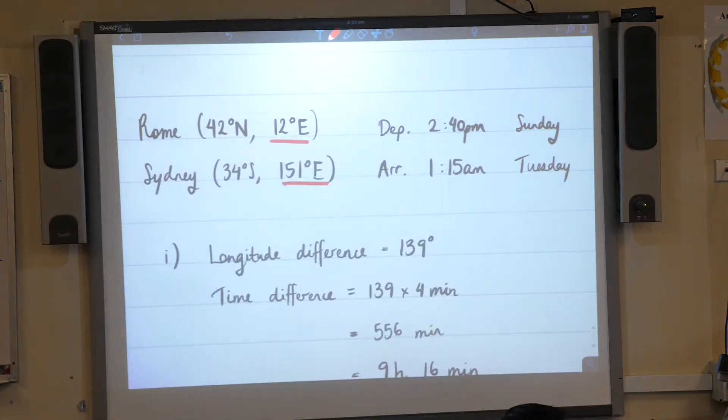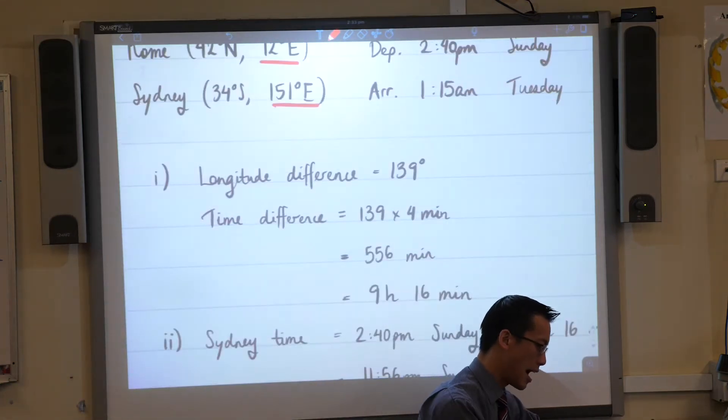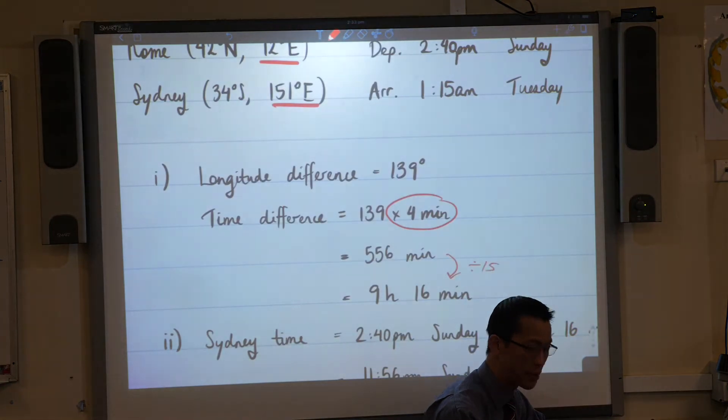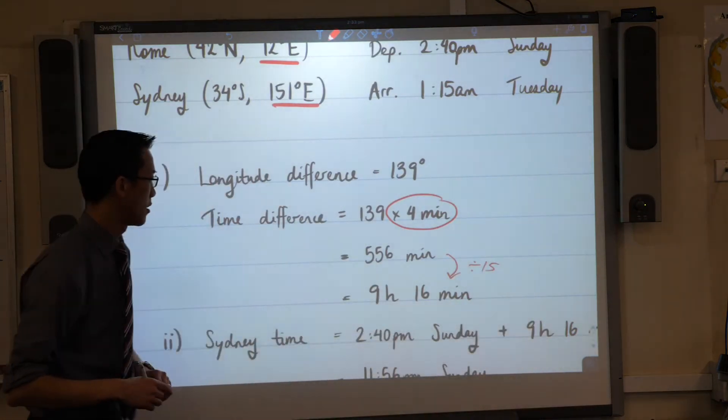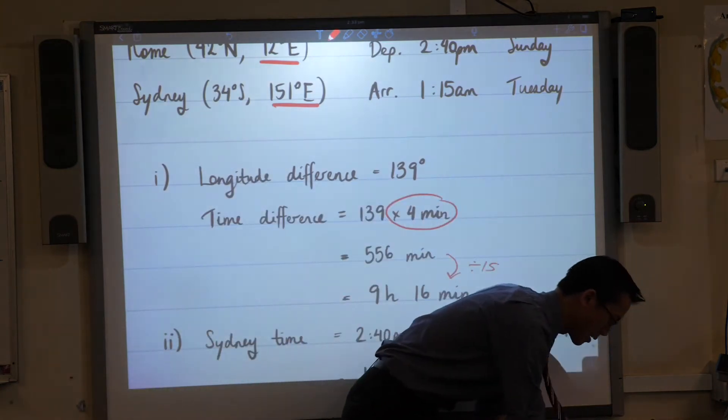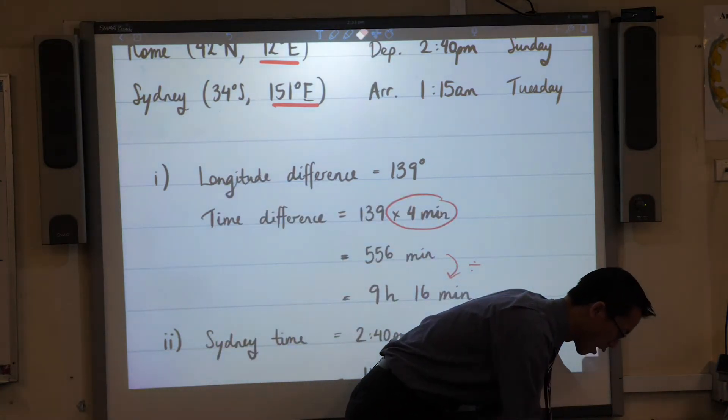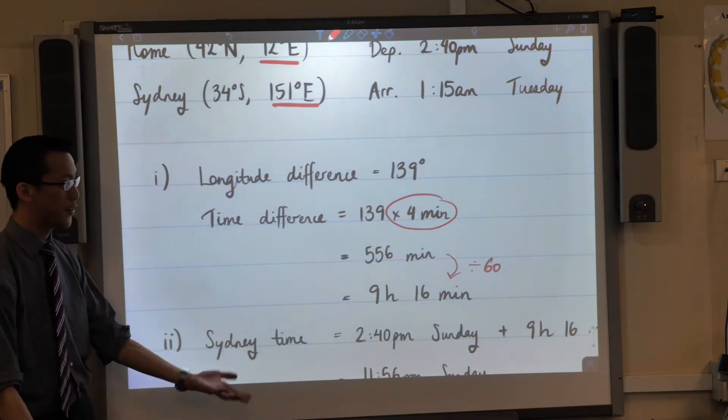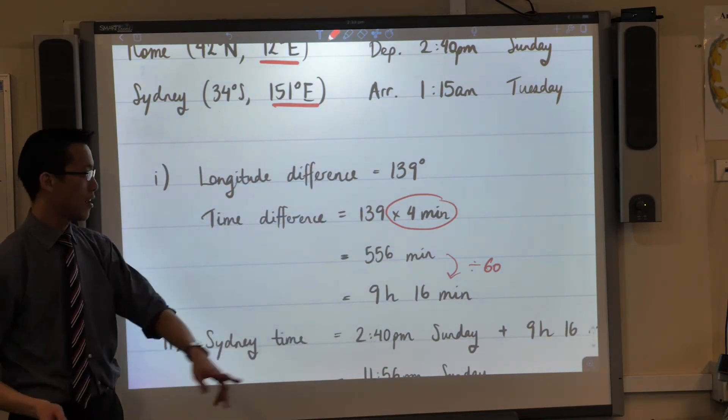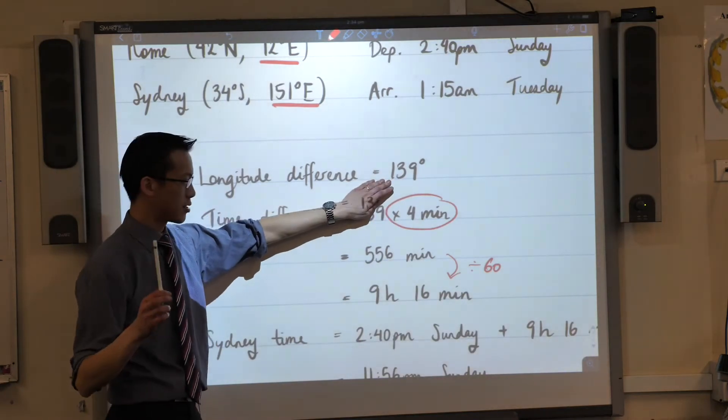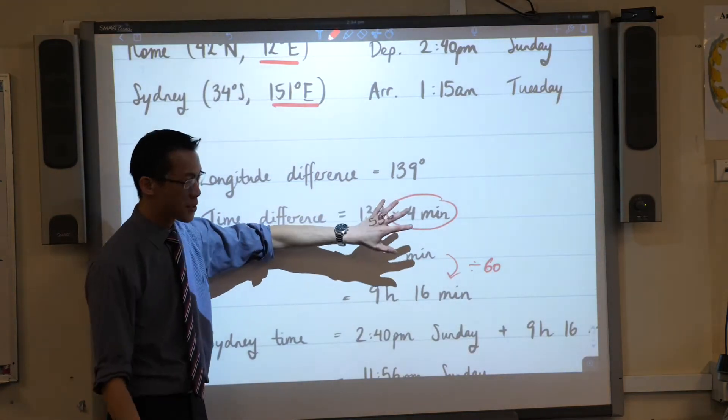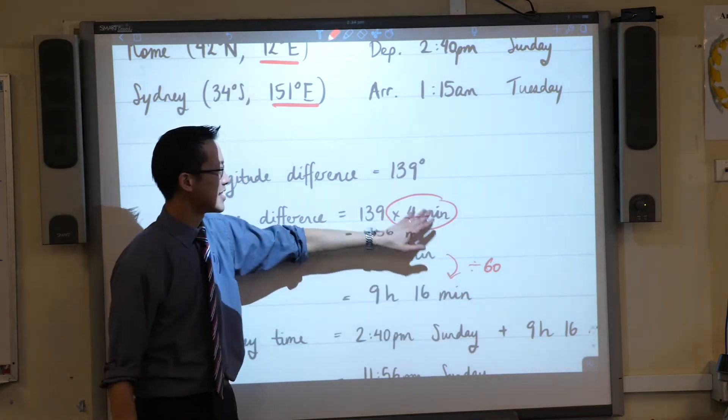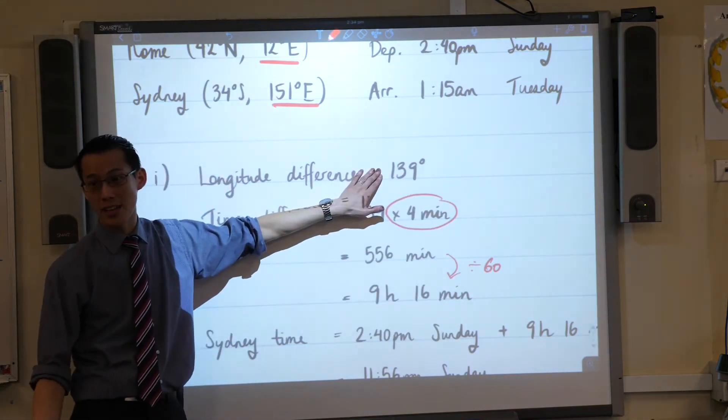So I multiplied by four and then divided by 60, because that's how many minutes there are in an hour. I haven't written it, but that's what I've done. Multiplying by four and dividing by 60 is the same as taking this number and dividing by 15.